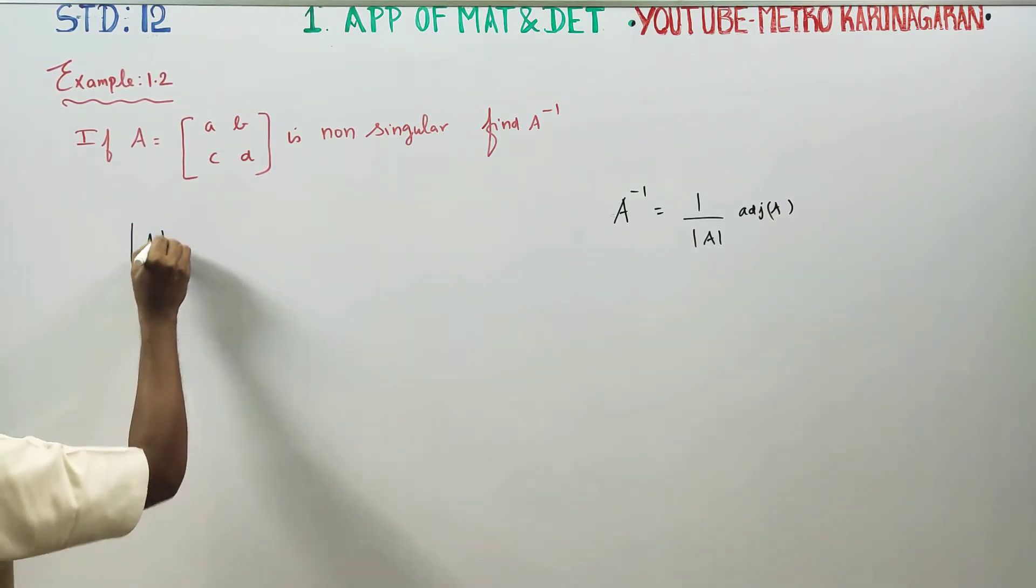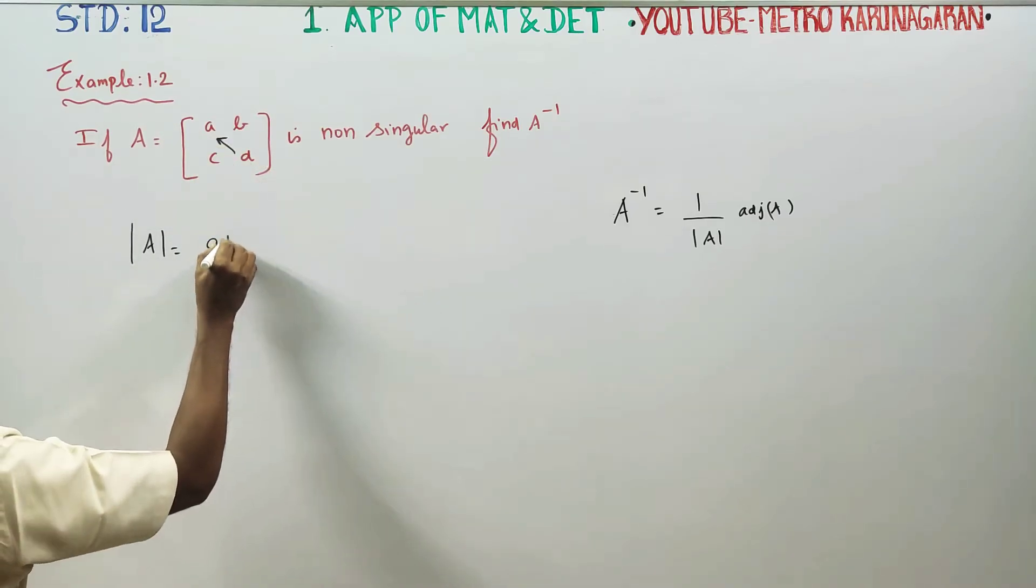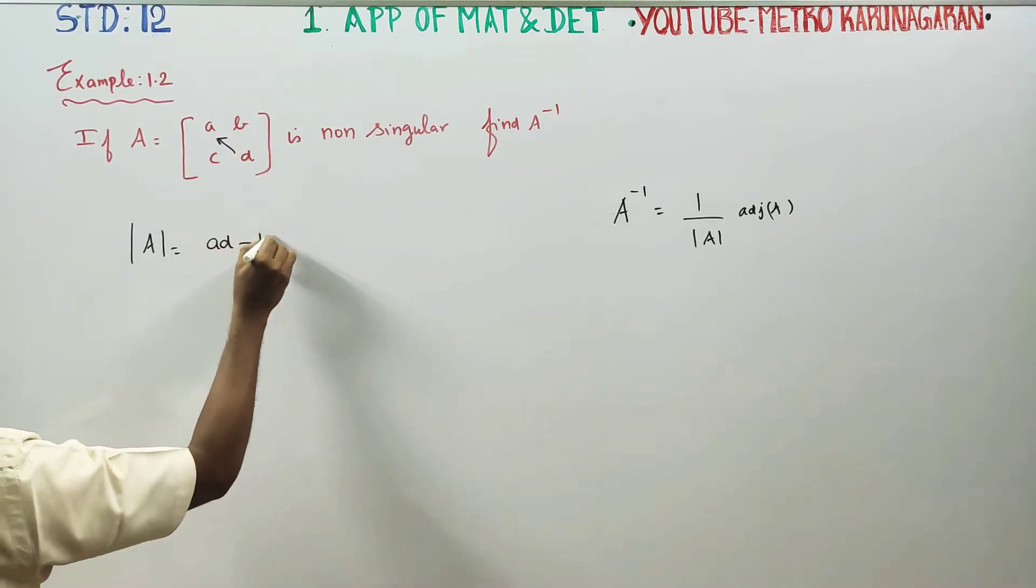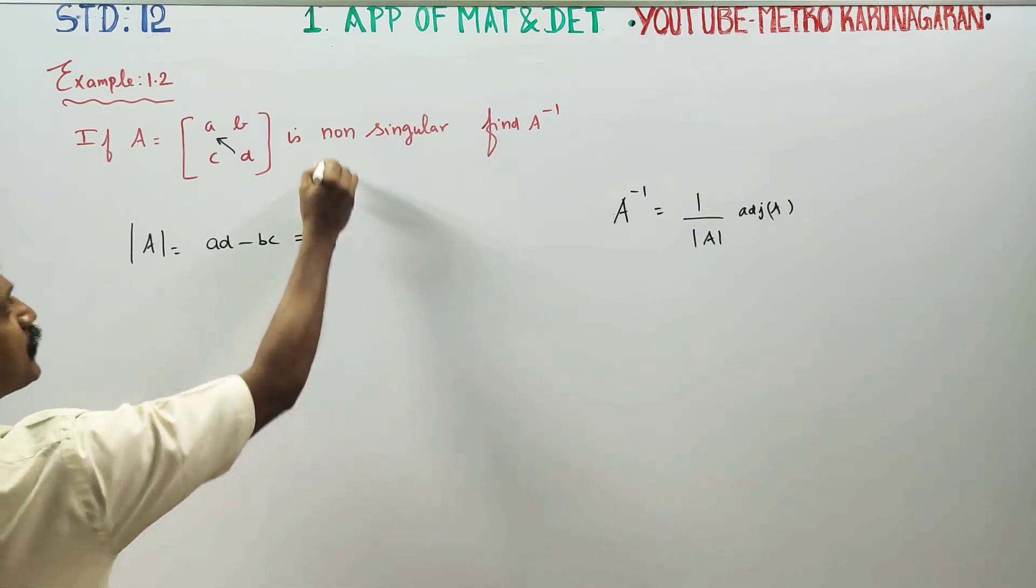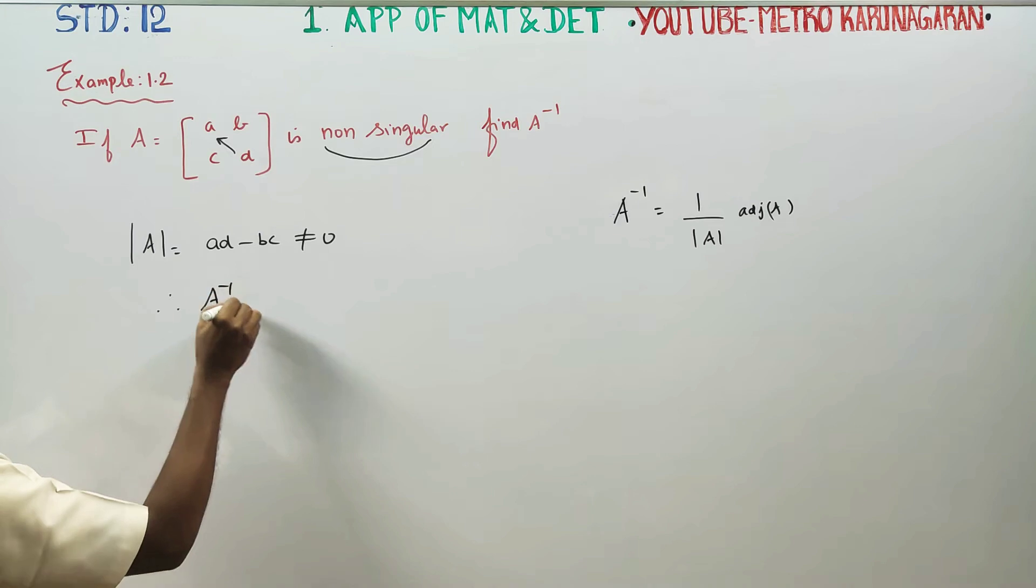First, determinant A. Right hand side minus left hand side. Ad, A into D minus Bc. This is not equal to 0 because non-singular. That's why A inverse can be done.